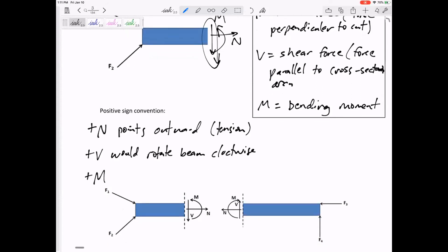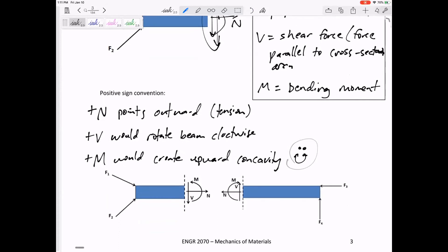Positive M would create upward concavity—smiley face. I'm not real big on V, but these two: getting the moment positive is concave up, this is a positive moment. And N is positive outward. Those are going to show up over and over throughout the semester, especially that N positive outward.